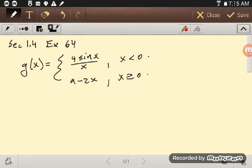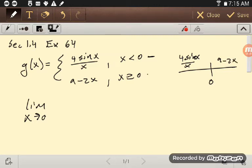To do this problem, what I need to do is figure out what the limit is as x goes to zero from the left. As I look at this, zero here is where the first part, the 4 sine x over x goes, and then a minus 2x goes over here. So I want to know the limit as I'm coming in this way: 4 sine x over x.